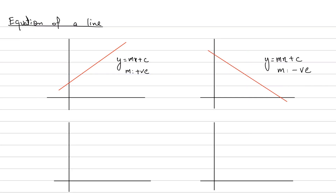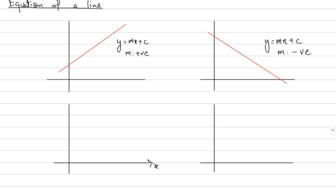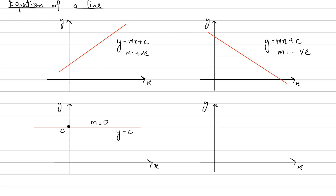The next two cases are very important and a lot of students confuse between them. If you have a horizontal line, it will have gradient 0. Since the gradient is 0, its equation is y = 0x + c, and 0x is simply 0, so the equation becomes y = c, where c is the point at which it cuts the y-axis. For example, if a horizontal line cuts the y-axis at 1, its equation is simply y = 1. As we travel along this line, the y-coordinate is fixed while the x-coordinate changes.